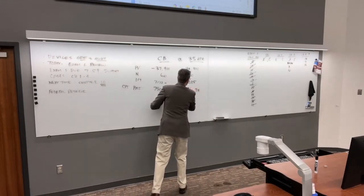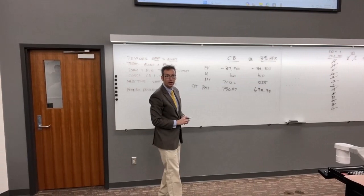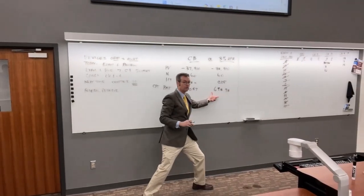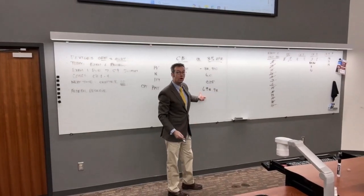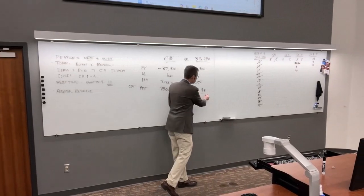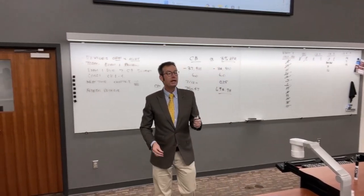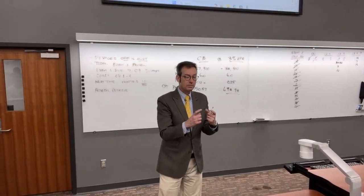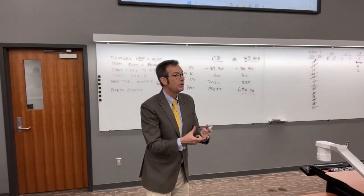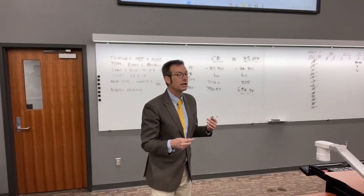For the 3% APR deal: PV = −38,900; I/Y = 0.25; N is the same 60. Compute PMT. I'm getting $698.98. You as a consumer would prefer the lower payment, so you'd choose the 3% APR deal.